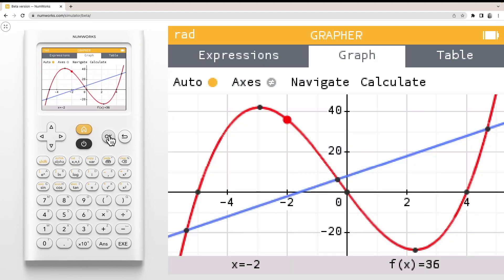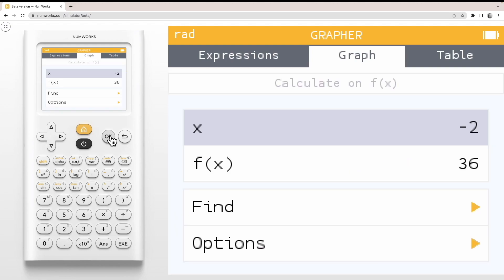To calculate the area between curves, first make sure that your cursor is on one of the curves you are interested in, if you have more than two graphs. Press OK to open the calculate menu.